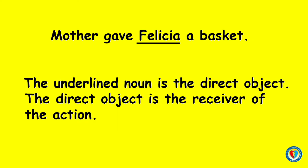Number 3. Mother gave Felicia a basket. For the third example, the underlined noun is the direct object. The direct object is the receiver of the action.